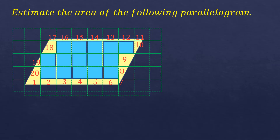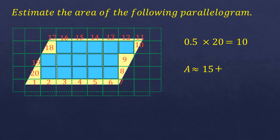So there are 20 partially shaded parts or squares. The estimated area of this parallelogram will be 15 plus 0.5 times 20, which equals 10. So 15 plus 10 equals 25. The area of this parallelogram is estimated to be 25 square units. Since the unit is not given — whether centimeter, meter, or inches — we name it square units.